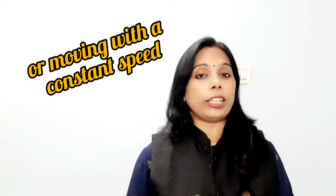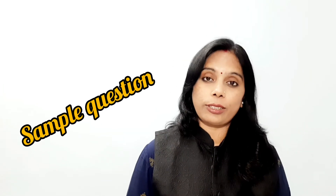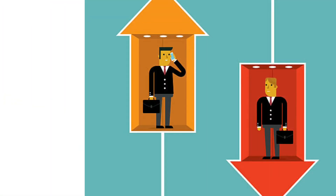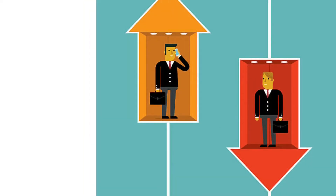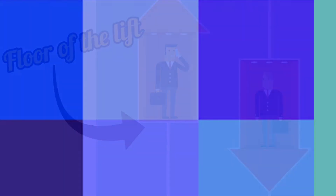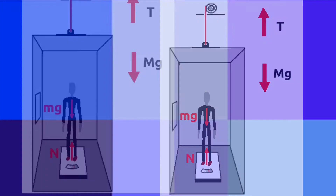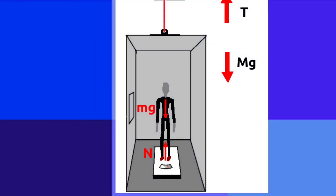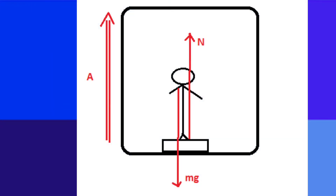In this video we are going to see some basic concepts as well as one question. When a person travels up or down in a lift, the floor of the lift acts as a connection between the person and the lift. For the system — meaning the person in the lift — the forces are the weights and the tension in the lift cable. The forces on the person are their weight and the normal reaction from the floor of the lift.